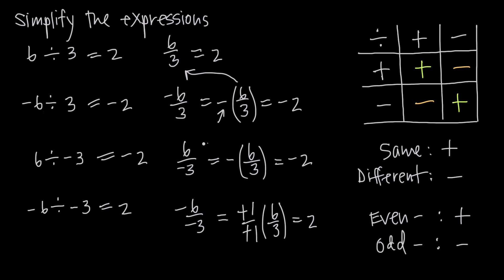So this same-and-different-sign system works great if we have just two numbers involved — we're dividing one number by another. But what if we have more than two numbers involved? For example, negative 2 times negative 3 divided by positive 6. Here we have three numbers: negative 2, negative 3, and positive 6. We have different signs involved — a negative, a negative, and a positive. So maybe we would say the result's going to be negative. But in fact, that's not true. This same-and-different-sign logic doesn't apply when we have more than two numbers involved.